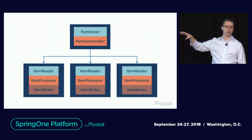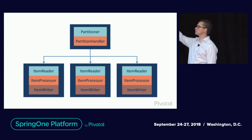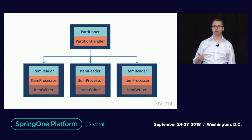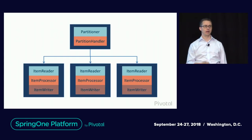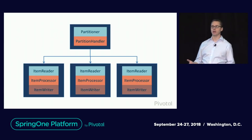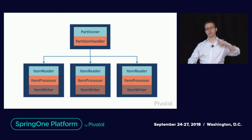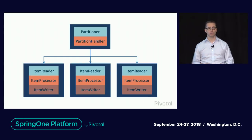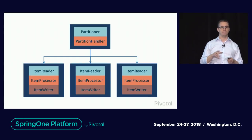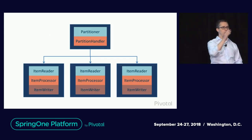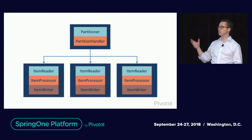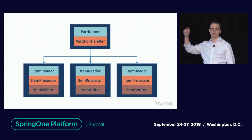Here we have a master-worker configuration. The master has two key components: a partitioner and a partition handler. The partitioner is responsible for understanding your data and how to divide it up — if you've got a directory of files, the partitioner may create a partition per file; if you're looking at a database table, it may partition based on keys. The partition handler is responsible for communicating the metadata about each partition to the workers. It's important to note that in this model, we're only sending metadata over the wire if we're using remote partitioning.